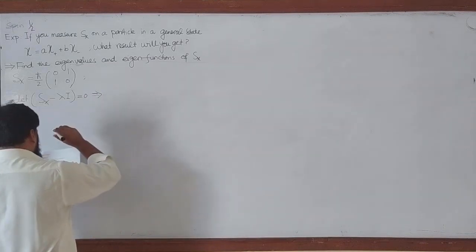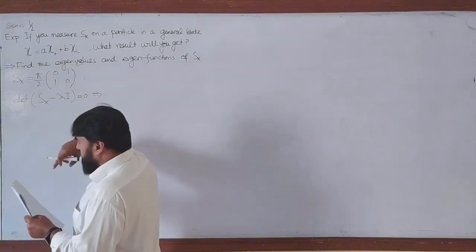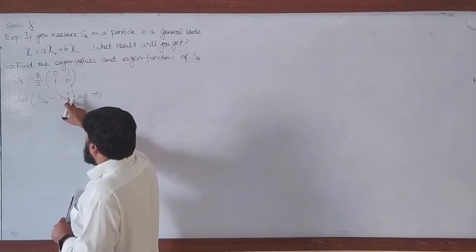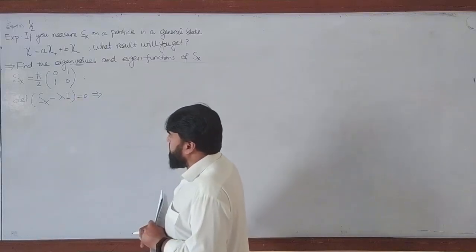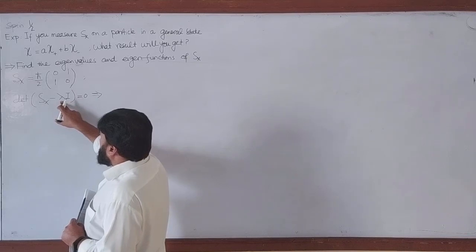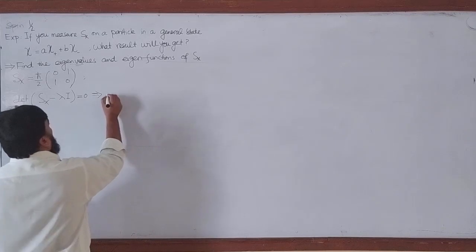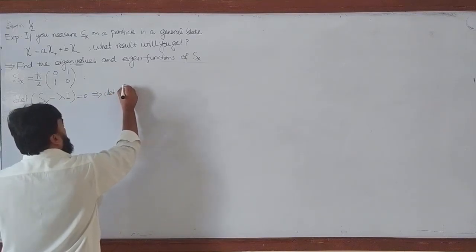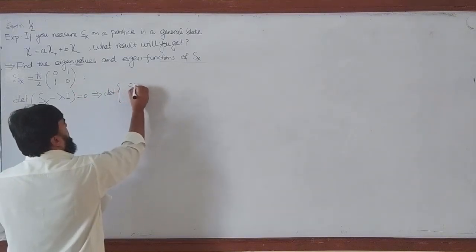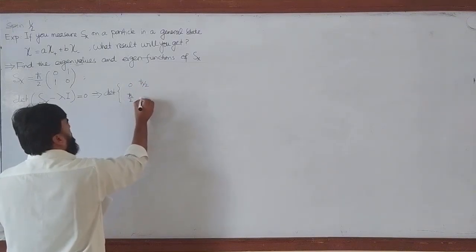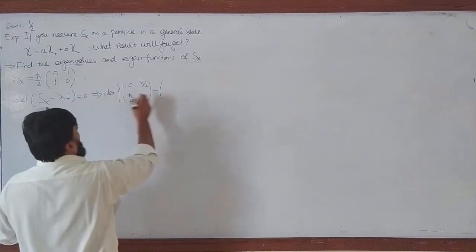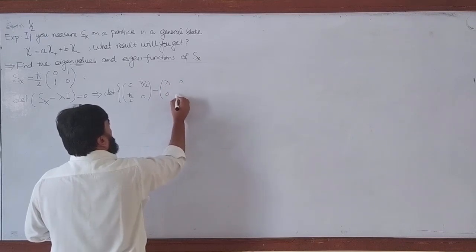From the characteristic equation, we get the determinant of (ℏ/2)[0,1;1,0] minus λ times the identity matrix [1,0;0,1]. Subtracting λI from the Sx matrix gives us the determinant of the matrix [−λ, ℏ/2; ℏ/2, −λ] equals zero.